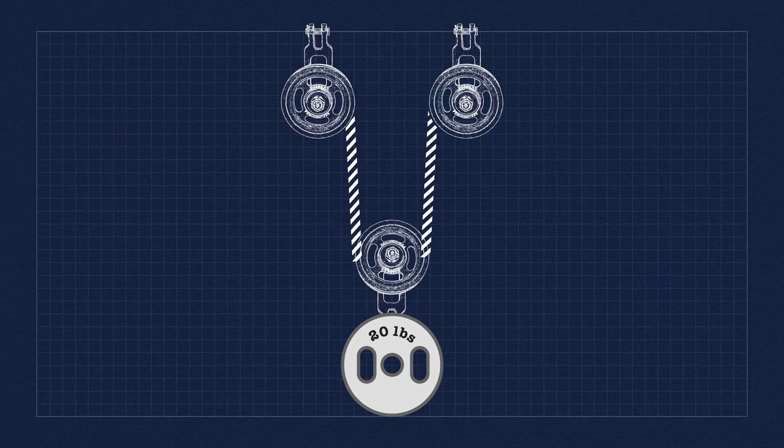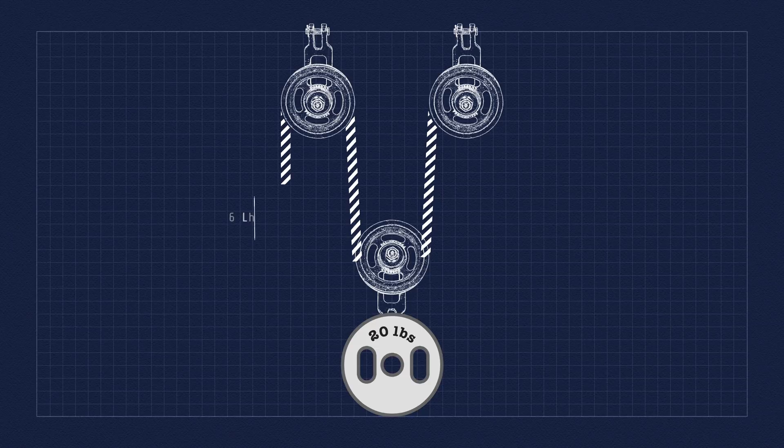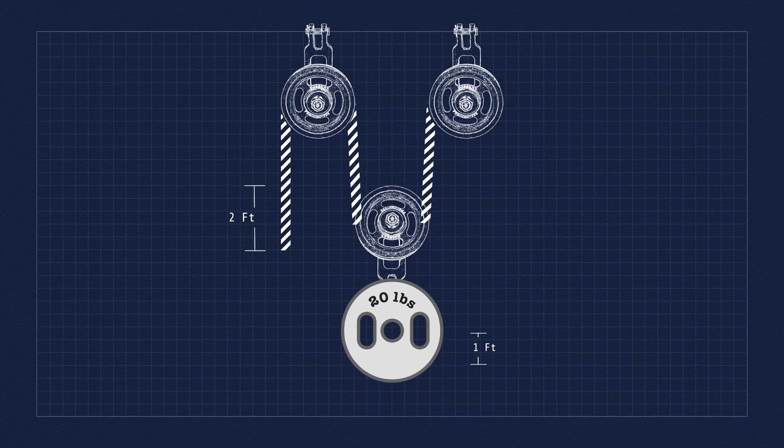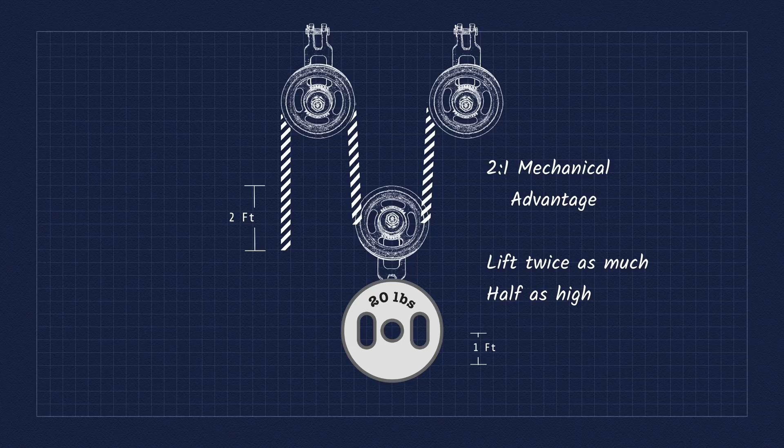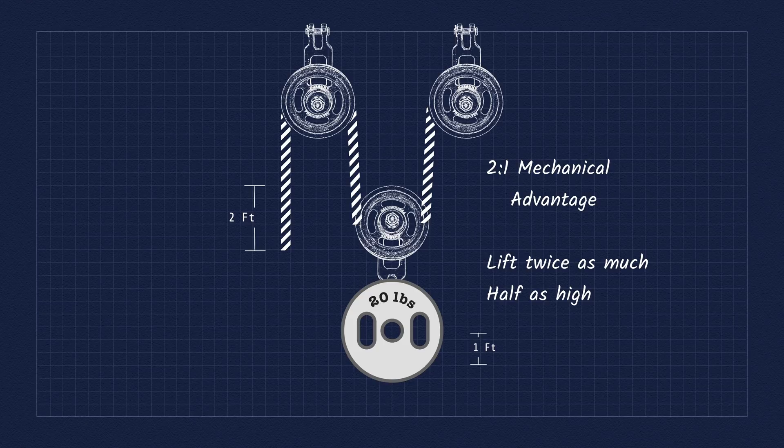Now instead, if you added a second pulley, attached the weight to it, and pulled down 2 feet with 10 pounds of force, you could now pull 20 pounds of weight, but it would only travel 1 foot. This represents a 2-to-1 mechanical advantage. Gears in a reduction set work using the same principle. And so the greater the gear reduction is, the lower the top speed, but the greater the torque down to the wheels.